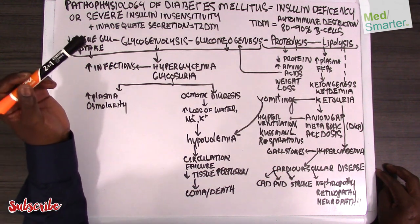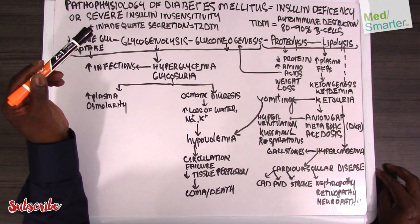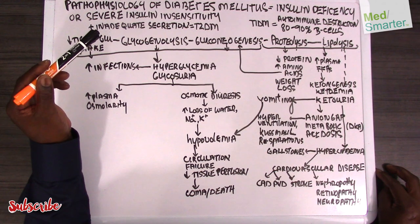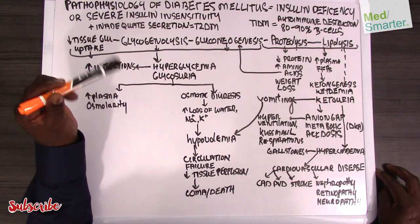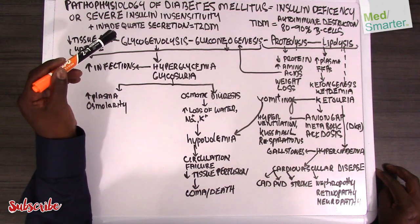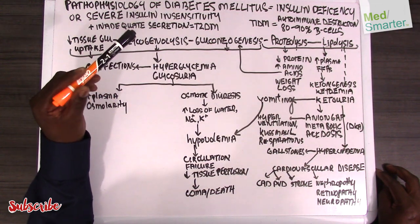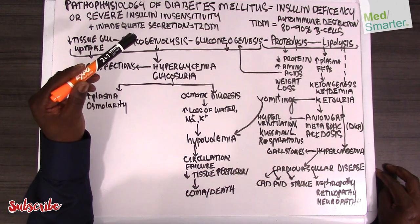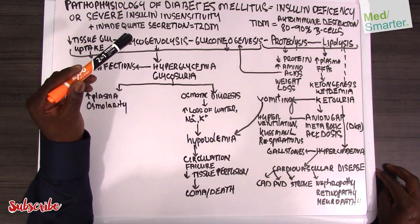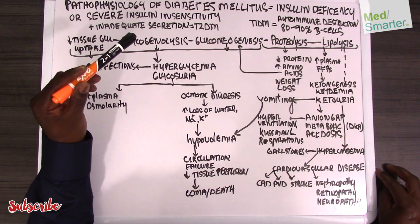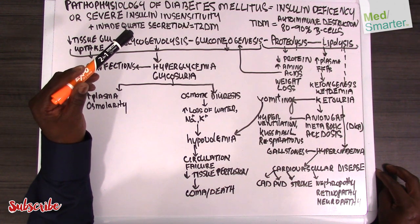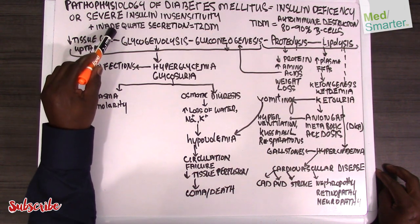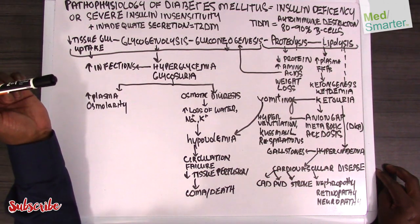The major underlying factor responsible for triggering the pathophysiology in Type 2 diabetes mellitus is insulin insensitivity in peripheral tissue, or insulin resistance, which is necessary but not sufficient for an individual to have frank clinical Type 2 diabetes mellitus. In addition to insulin resistance, they also need inadequate insulin secretion from the beta cells.